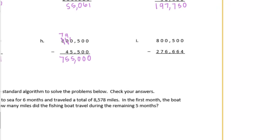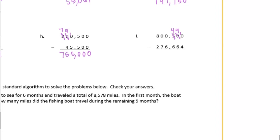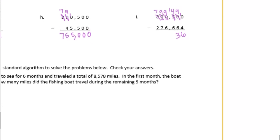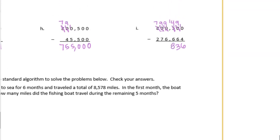0 minus 4 we can't do. But I can't borrow from this 0, so we need to borrow from the 5 — make that a 4. Borrow from that, so it's 9. And 10 minus 4 is 6. 9 minus 6 is 3. 9 minus 7 is 2. 4 minus 6 — can't borrow from that 0 or that 0, so I've got to borrow from the 8 — it becomes 7. Make that 9. That becomes 9. And this is 14. So 14 minus 6 is 8. 9 minus 6 is 3. 9 minus 7 is 2. And 7 minus 2 is 5. 523,836.